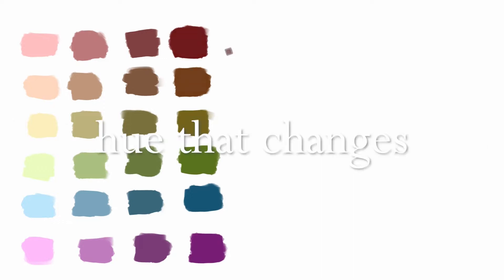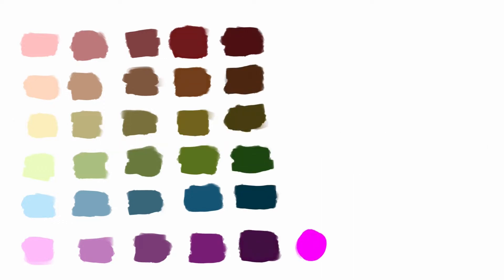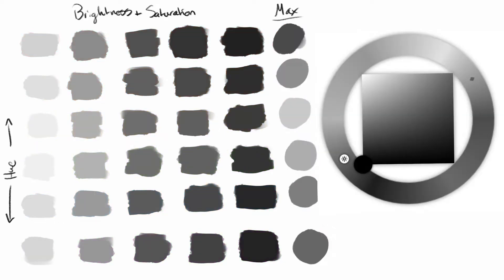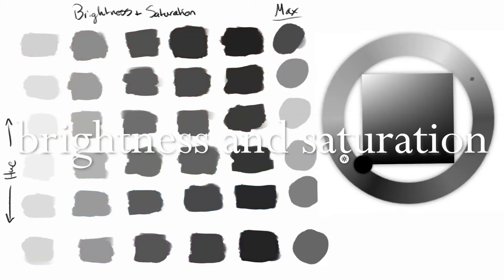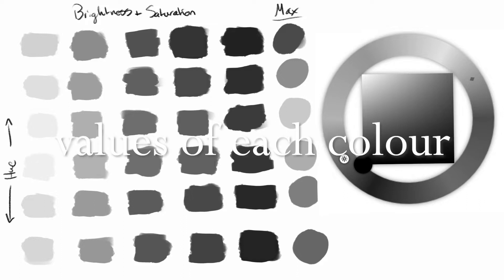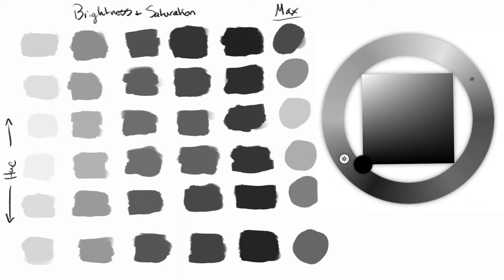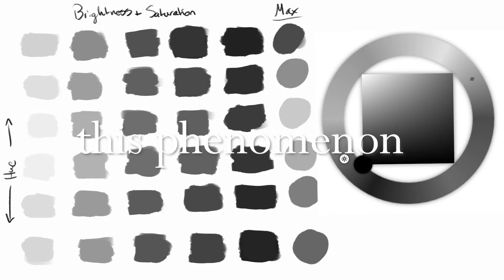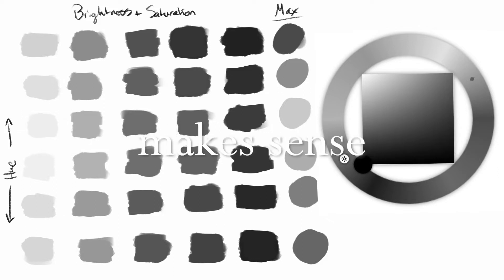Here is a table of colours. Each column has the same brightness and saturation and it's only the hue that changes. Now let's look at the value of each colour by converting it to greyscale. Without the brightness and saturation being the same, the values of each colour are completely different. What if I were to tell you that this phenomenon actually makes perfect sense?